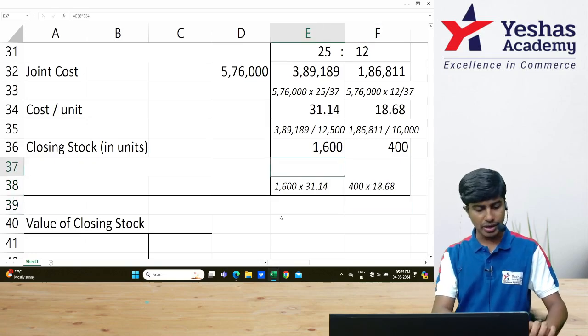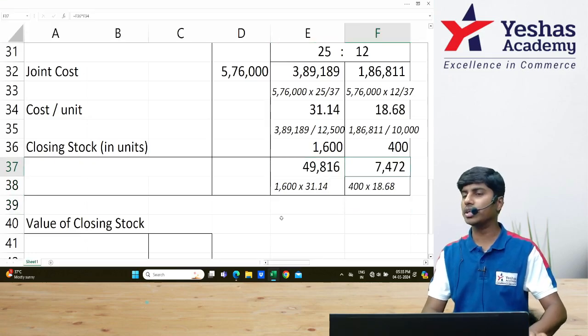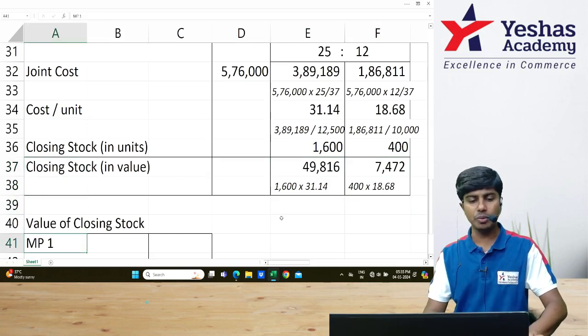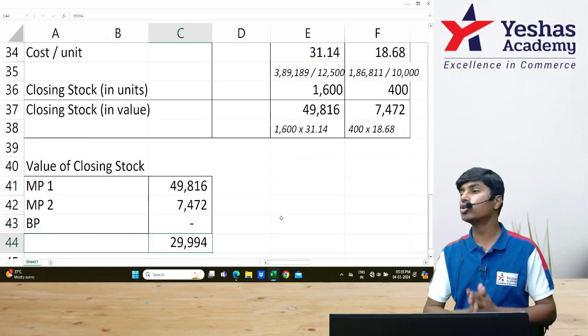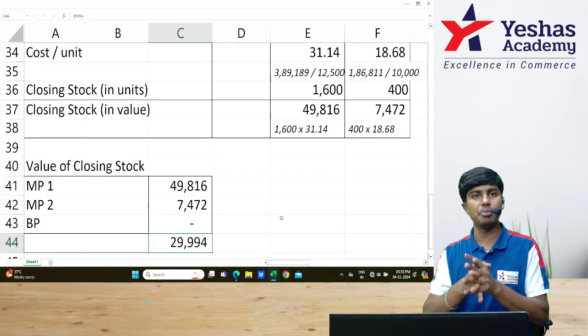This will give me inventory value of ₹49,816 and ₹7,472. This is the value of inventory that I should be disclosing in my books of accounts and this will be considered in computation of profit.